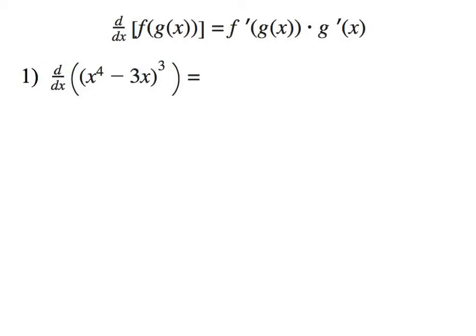Let's show what that looks like. For this particular problem, we're taking the derivative of this. Notice how there's an outside function of a cube, and the inside function is x to the fourth minus 3x. The outside function is f of x, which is something cubed — that's your outside function. The inside function is g of x, which is x to the fourth minus 3x for this particular problem.